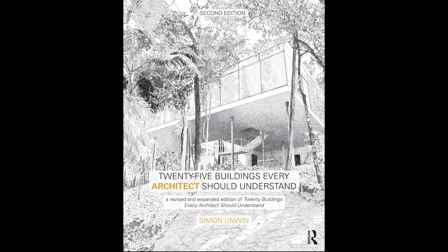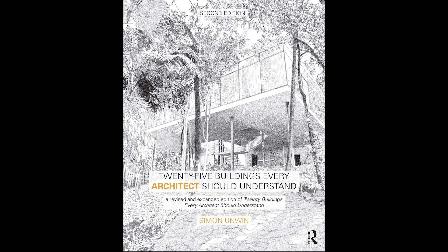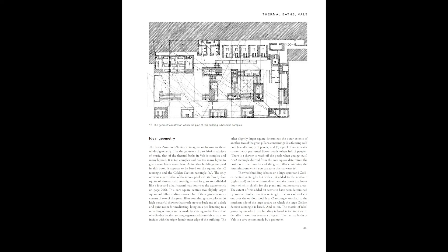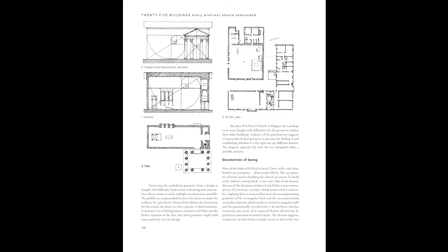Your homework between the first and second class is to read the chapter on your precedent in the book 25 Buildings Every Architect Should Understand by Simon Unwin. Just a note: Unwin talks a bit about different types of geometry and how they inform design, especially ideal geometry. We won't spend much time focusing on ideal geometry in this course, so if that's in your reading, you don't have to read those parts too closely.